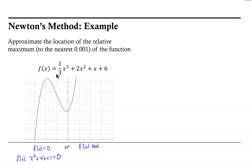We want a relative maximum. Looking at the graph, we can see there are two critical points — the one on the left associated with a maximum, and the one on the right associated with a minimum. Notice that the critical point does not lie neatly on the grid, so it's not clear what that value is. We're going to approximate that x-coordinate to three decimal places, then use the second derivative test to confirm it belongs to a relative maximum.